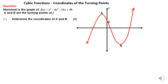I have one question here from one of the past examination papers as an example. The graph of f(x) = x³ - 4x² - 11x + 30 is sketched. Points a and b are the turning points of f. We need to determine the coordinates of a and b, which are the turning points of the function.